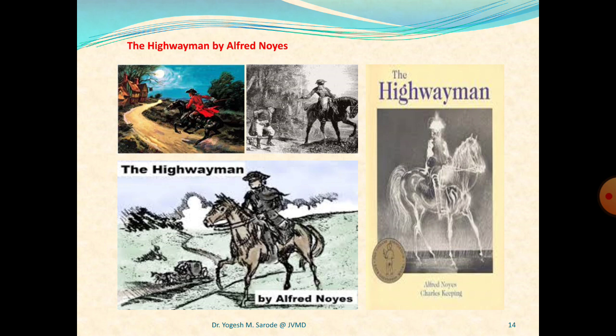Metaphor is a comparison between two unlike things that does not use 'like' or 'as', and is also present in the text. When using this technique, a poet is saying that one thing is another thing — they are not just similar. Noyes uses three metaphors in the first stanza of 'The Highwayman'. He compares the moon and wind to the sea, and the road to a ribbon of moonlight.